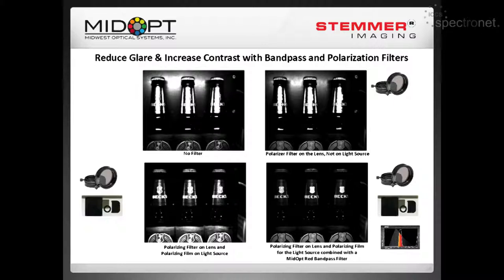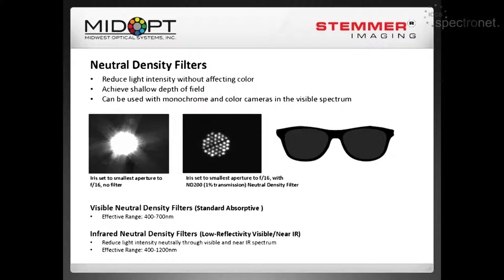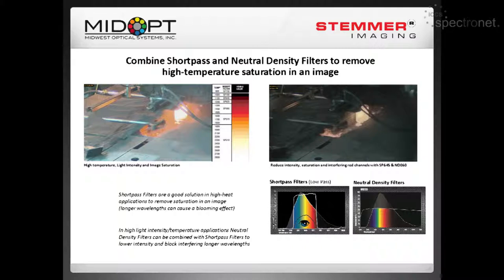All our filters are equipped with male and female threads so they can be threaded together. We offer a series of neutral density filters for both the visible spectrum and infrared, used to remove saturation in an image. Short pass filters are typically used for color cameras to give a more natural color rendition. In high-heat, high-temperature, or welding applications, there tends to be too much saturation — in a molten metal application with a blooming effect, we used a short pass filter to limit the red channels and a neutral density filter to remove the saturation.